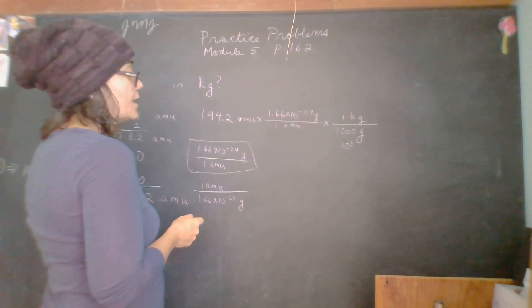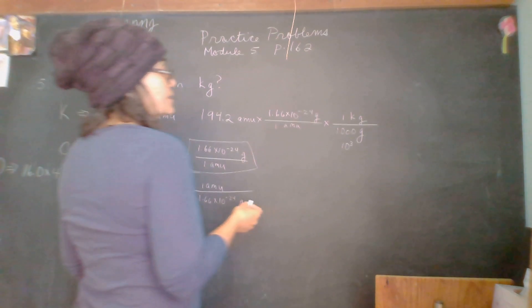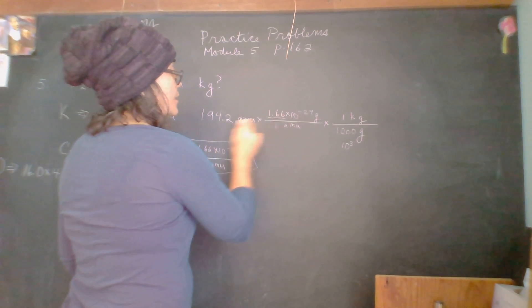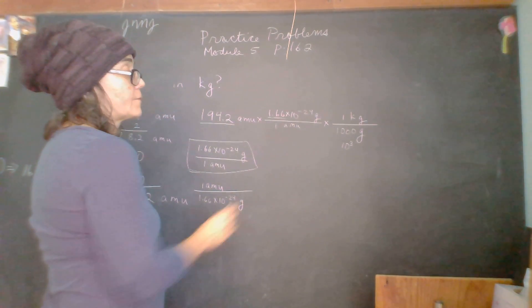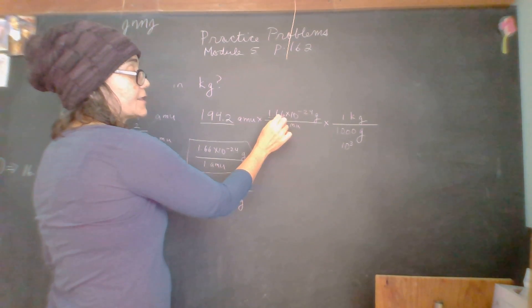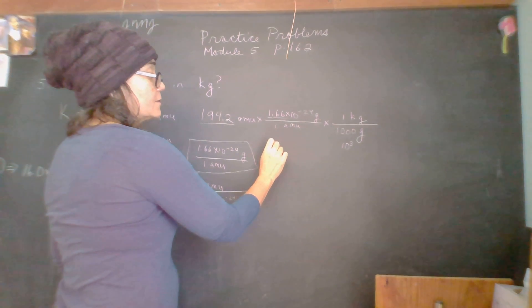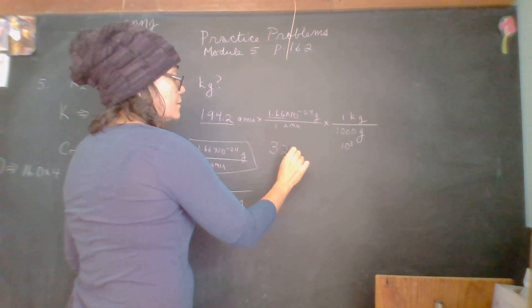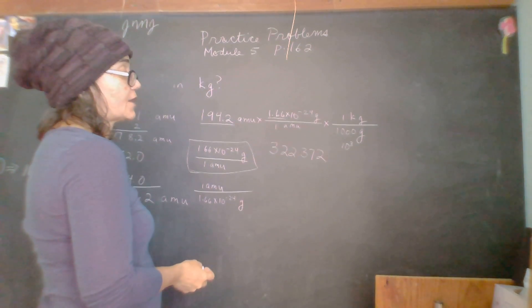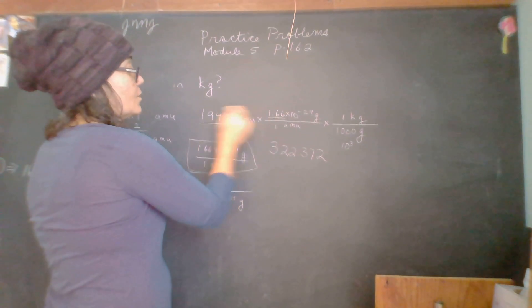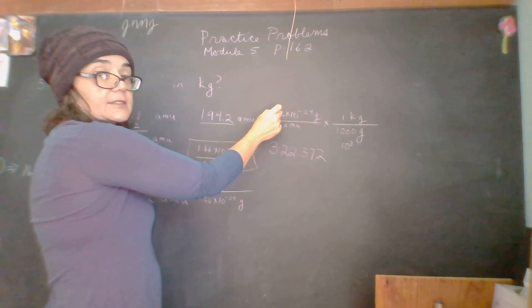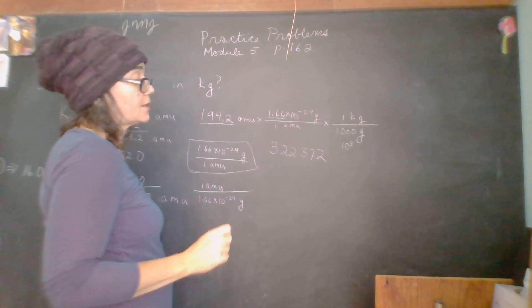We're going to multiply 194.2 times 1.66 and just tell me what that is. Okay. 194. So Martin's multiplying that times this. 194.2 times 1.66 equals 322.372. Okay. Which obviously is too many significant figures for us to report. We want one, two, three, four. We only want three. This conversion factor has only three and it's not infinitely precise. So we have to only be limited by three.